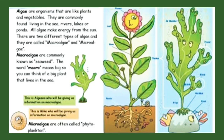As you can see here, macroalgae are commonly known as seaweeds. The word 'macro' means big, so you can think of a big plant that lives in the sea. Microalgae, on the other hand, are often called phytoplanktons. 'Micro' means small, so for these we must use a microscope to see them.